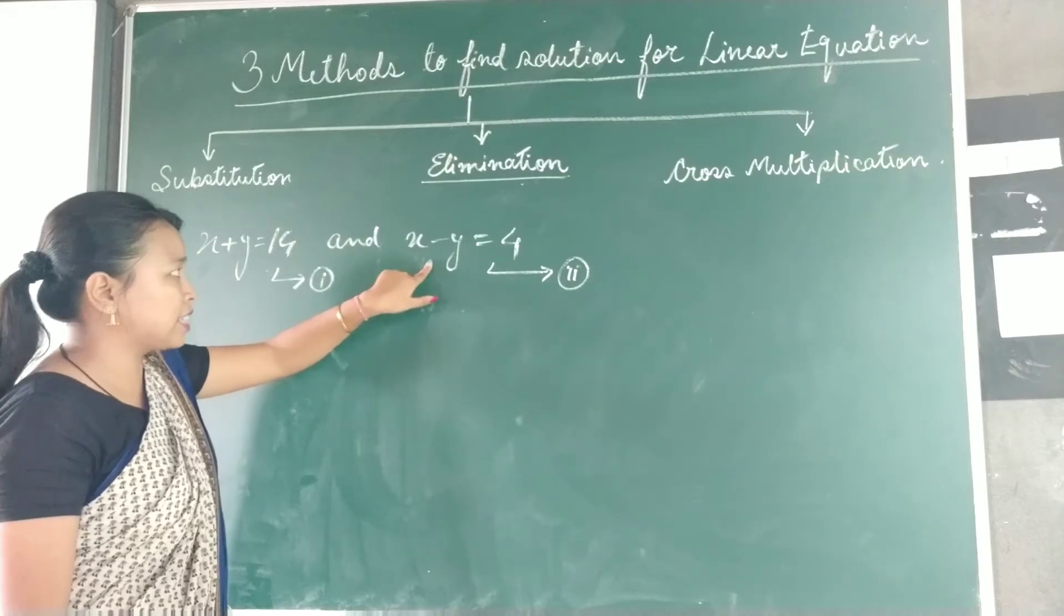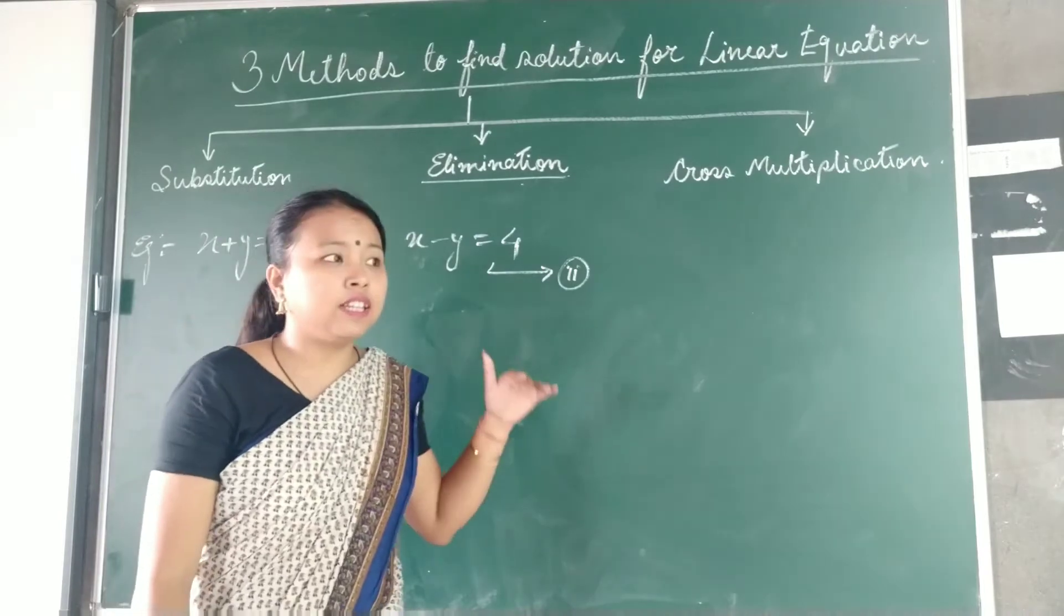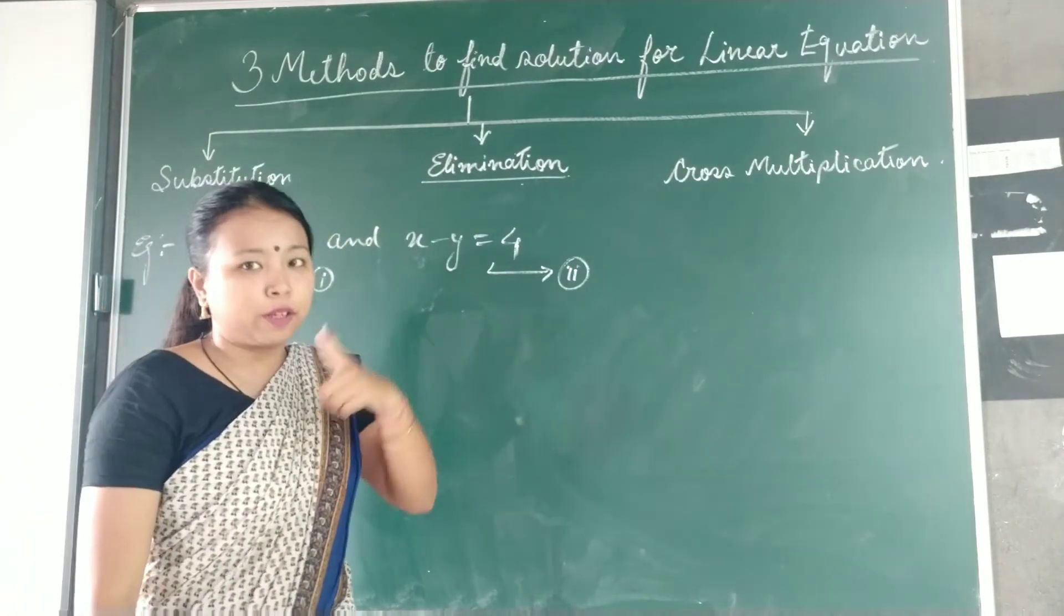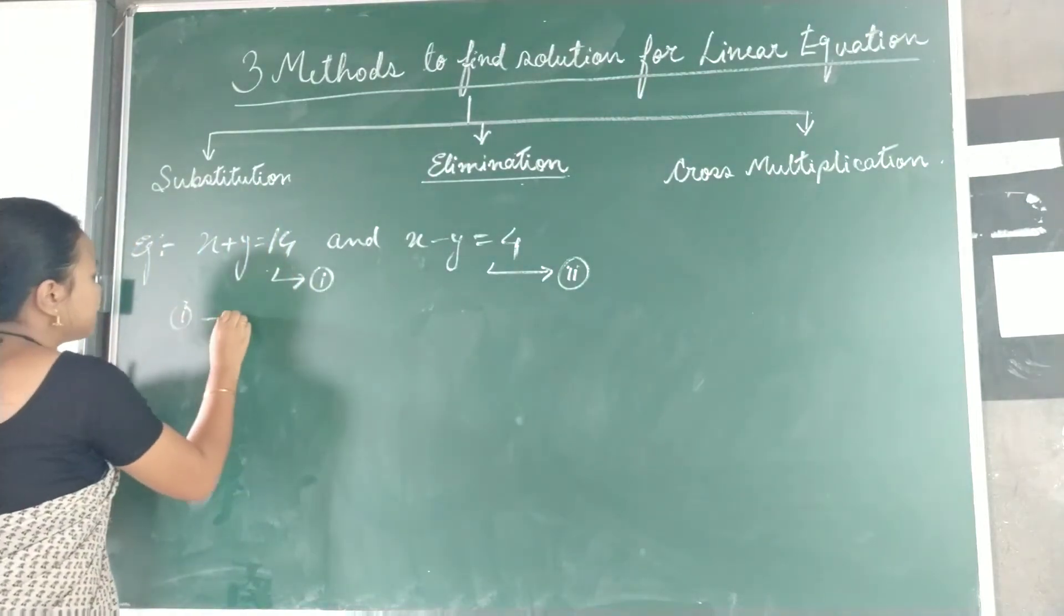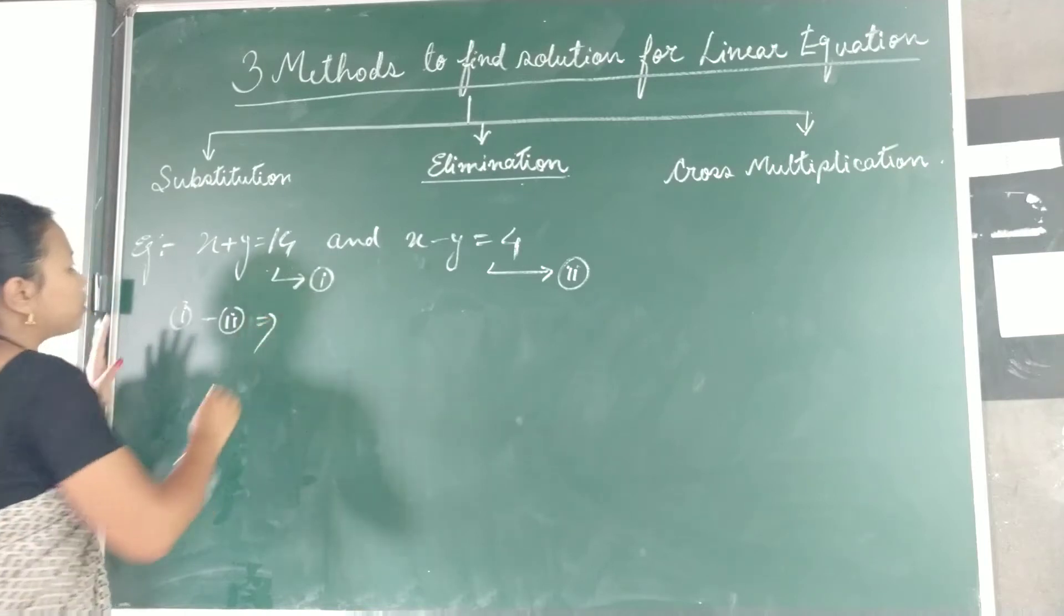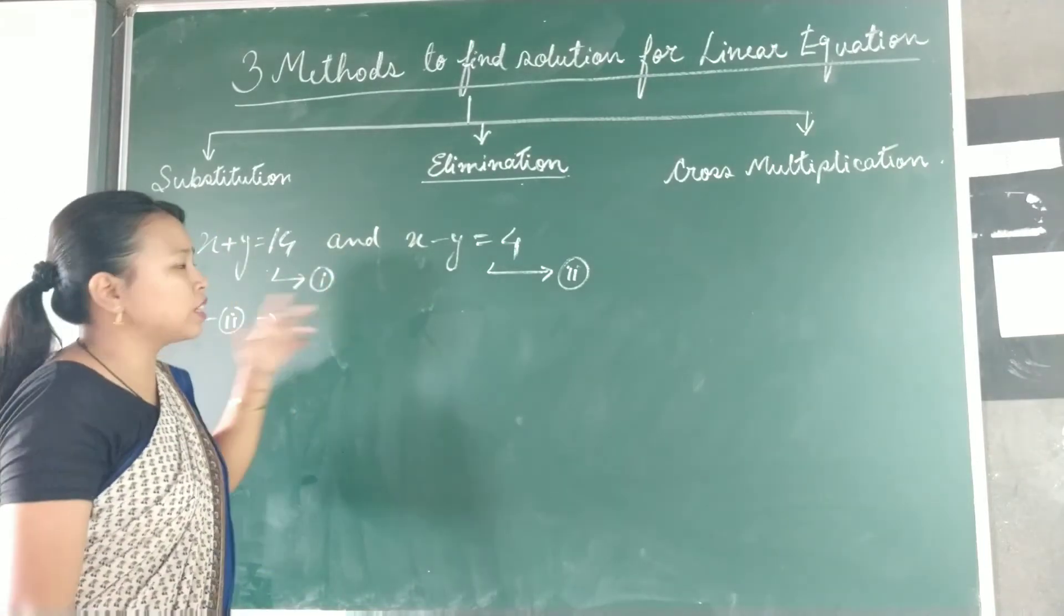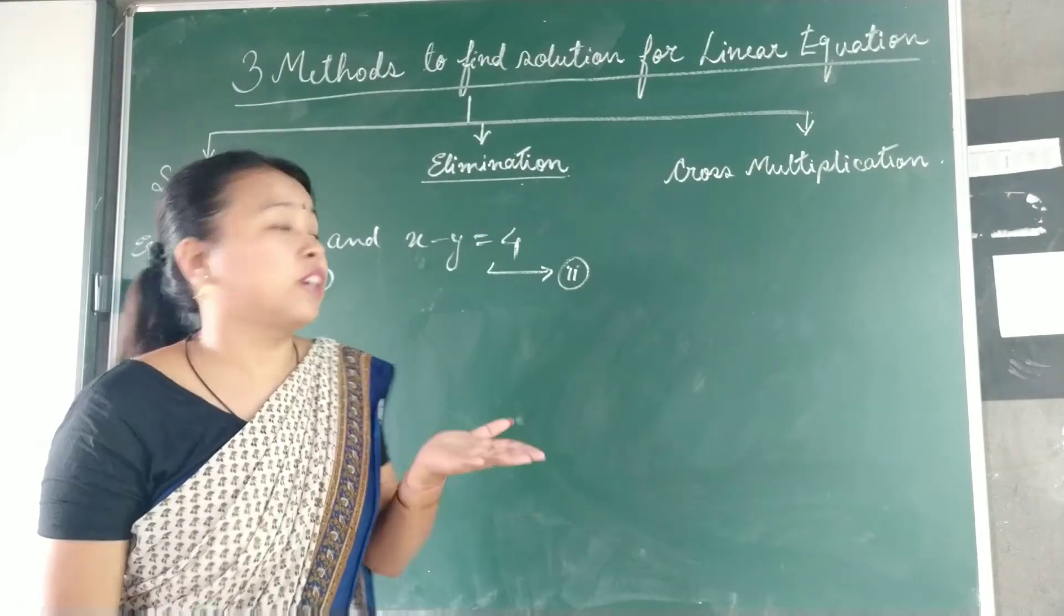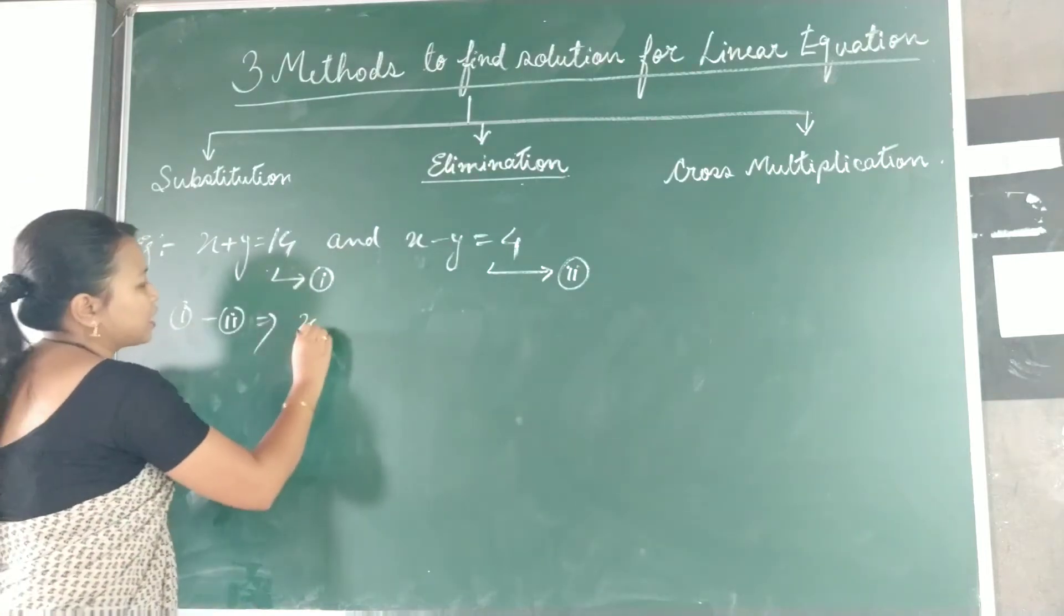The coefficient of x in both equations is 1, so I don't have to multiply any numbers since they are the same. Here I can simply do equation 1 minus equation 2. If I do plus, x plus x will result in 2x, so I will eliminate by subtraction.